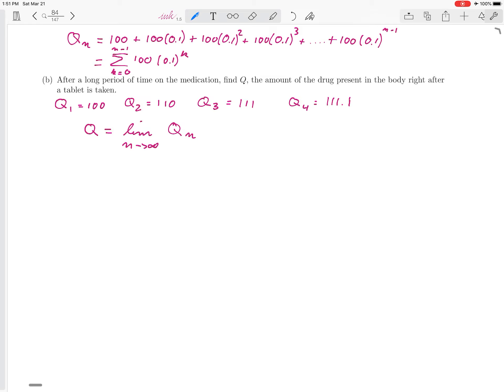Remember that Qn is the amount of medication in your body right after you take the nth tablet, and we want to know what happens as n goes to infinity. We can rewrite this limit using summation notation, and instead of going from 0 to n, we are going from 0 to infinity, and the expression that we are investigating is 100 times 0.1 raised to the kth power.